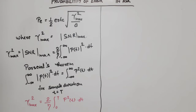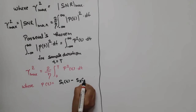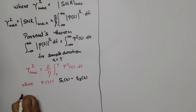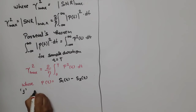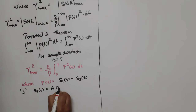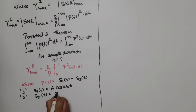Here p(t) equals s1(t) minus s2(t). In the case of ASK, when we transmit a '0', we do not transmit a signal, so s2(t) is equal to zero. This means p(t) simplifies to just s1(t).